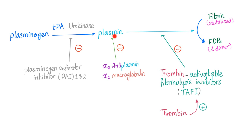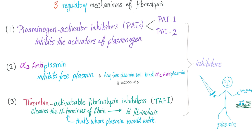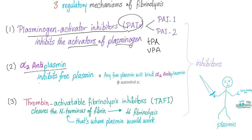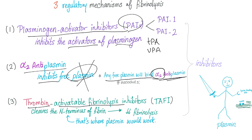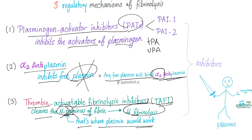Remember when thrombin and plasmin are enemies? Thrombin activatable fibrinolysis inhibitors, or TAFI, cleave the N-terminus of fibrin, which leads to decreased fibrinolysis because the N-terminus is where plasmin would work. When you cleave the N-terminus, plasmin has nothing to work on — it's like taking the case documents from the lawyer.